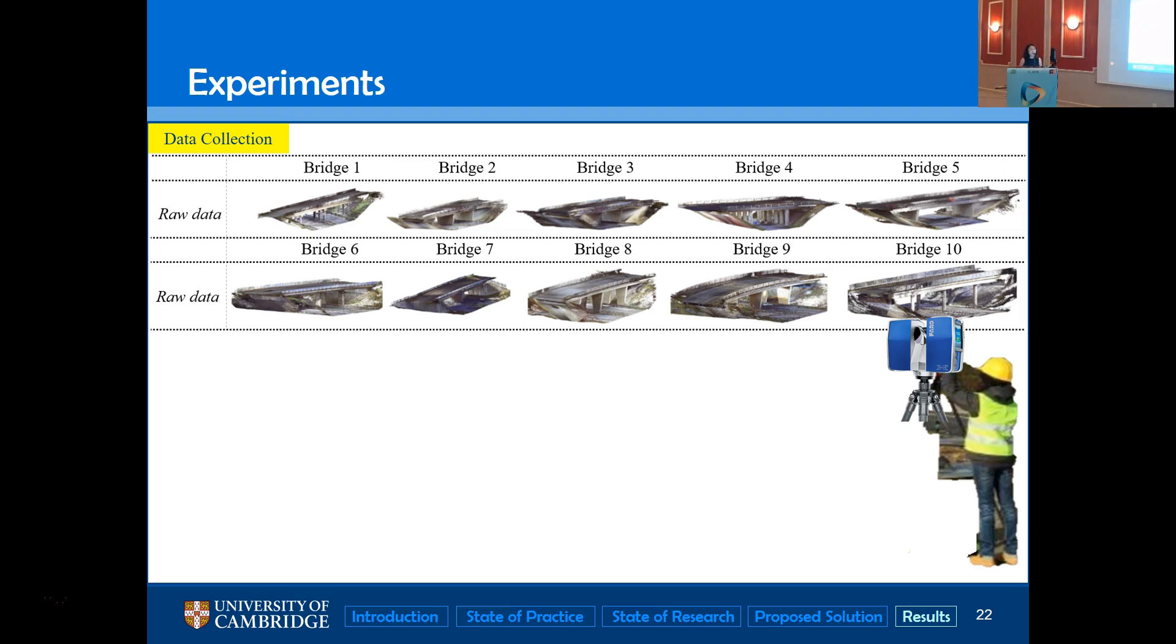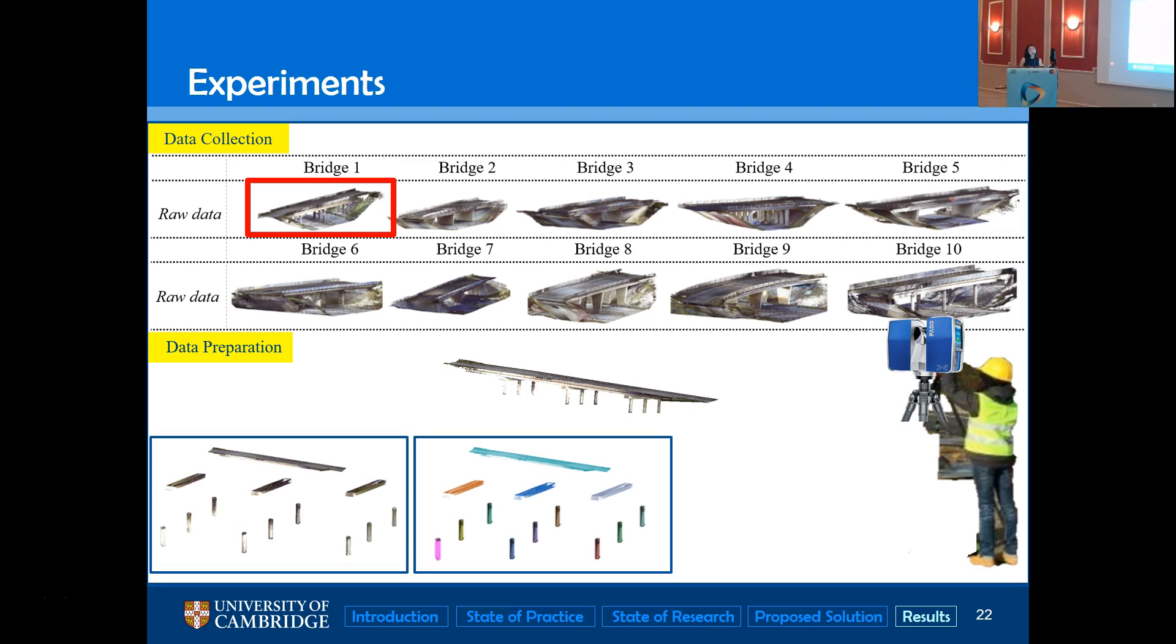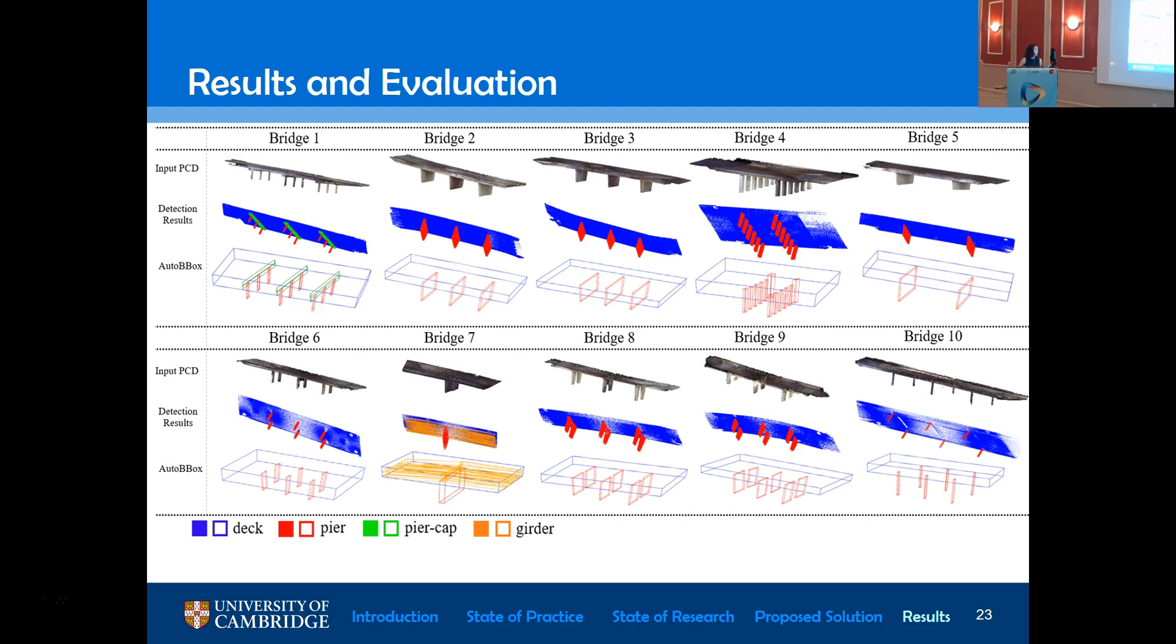Talking about the experiments, as I mentioned, we have collected ten highway bridge point clouds last year using Faro Scanner, Faro Focus 3D X330. And then we did the data preparation. We removed the outlier points, and we keep only the key components that we would like to detect in this work. And we manually segment the whole bridge point cloud into semantic clusters. And we represent each point cluster with one oriented bounding box.